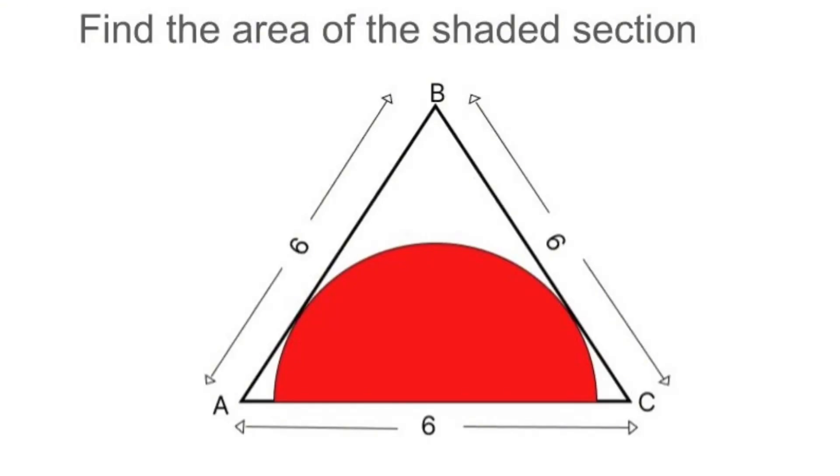All right, let's break this down together. We're working with an equilateral triangle. That means all three sides are equal. And in this case, each one is six units long.